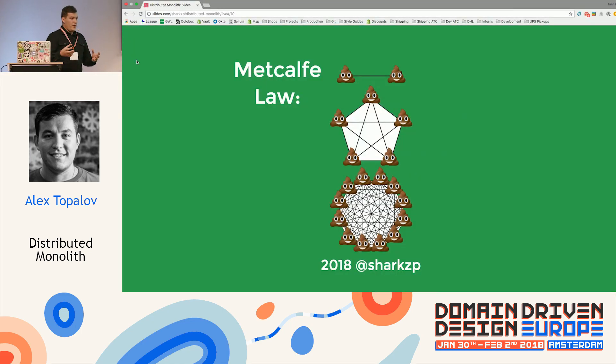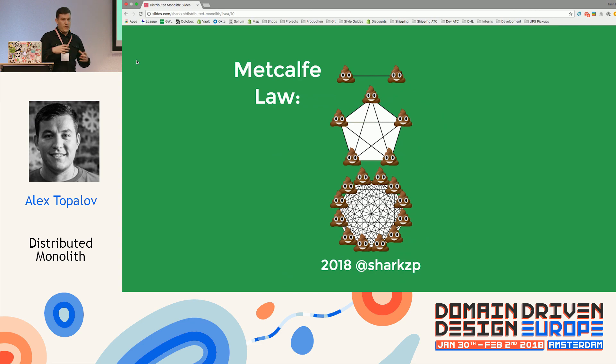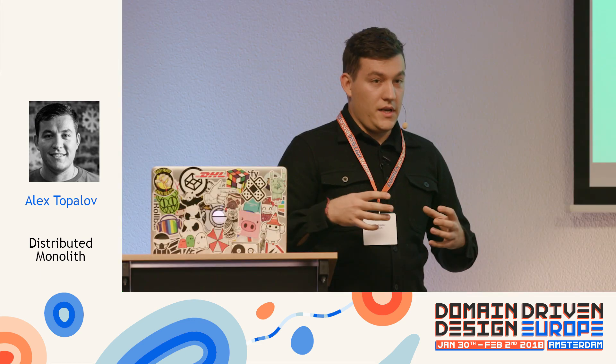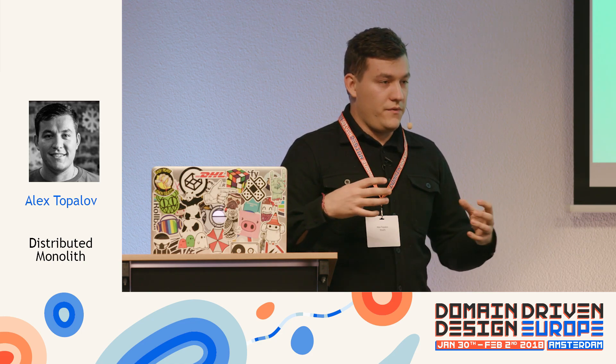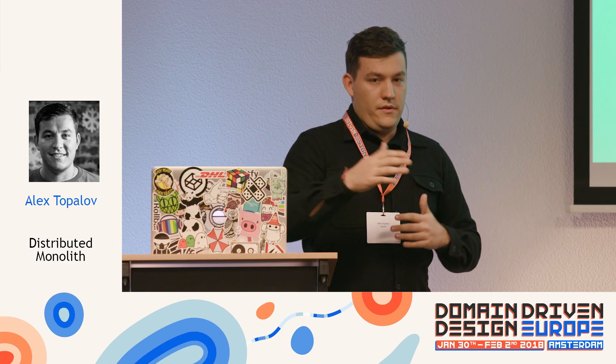According to Metcalfe's law, the complexity of a system is not only proportional to the sum of the complexity of each individual part, but also the complexity of the connections between those systems. If you have a lot of connections between subsystems, you're basically making a distributed monolith. And if you embed business logic in the events you send between components, you start losing track of where a saga starts and where it ends — you're losing the context of how everything works.